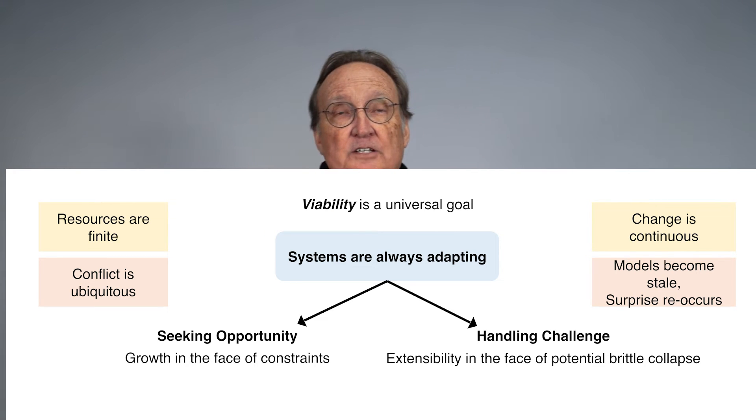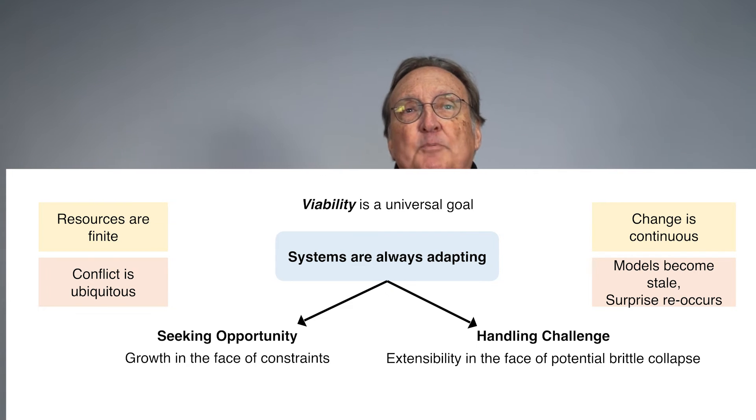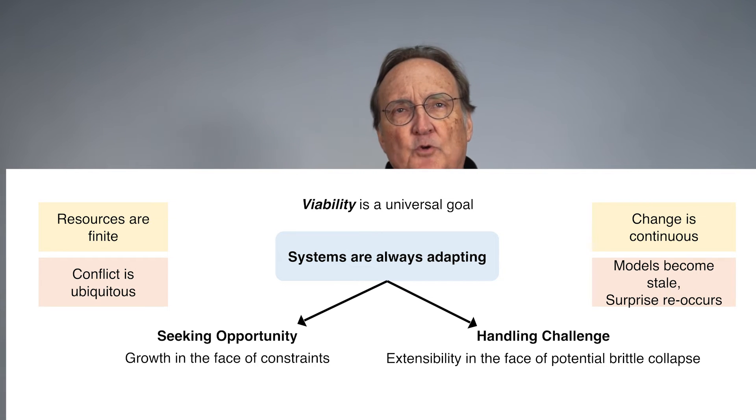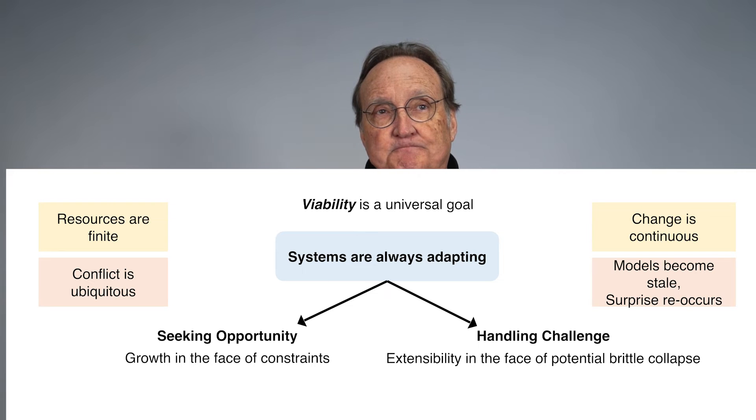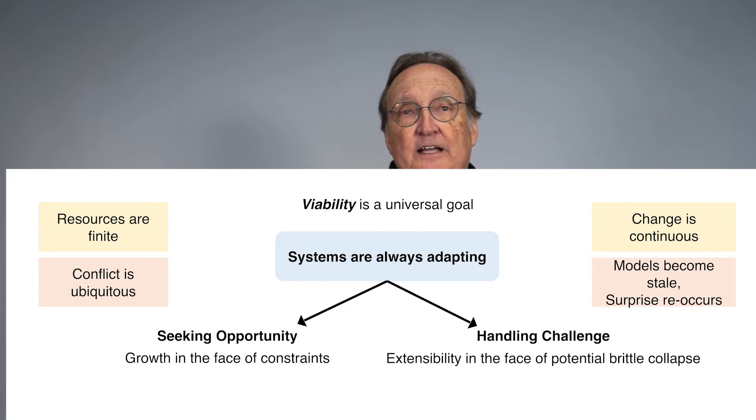What happens because of each of those? Finite resources mean we end up with conflicts. The potential for conflict — the reality of conflicts in what we're trying to accomplish — is ubiquitous; it is everywhere. Change being continuous creates another issue: whatever our model by which we operate, develop, and deploy new forms of technology, those models become stale. Resources are finite, so our models will be incomplete. They may improve, but they will become stale as change continues. Surprise will recur — over and over, even as we grow and create new forms of value for stakeholders.